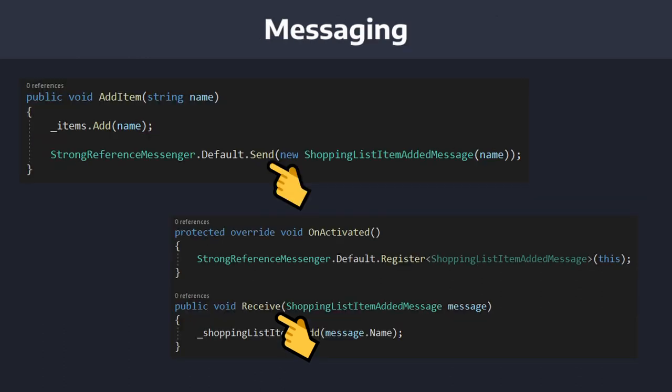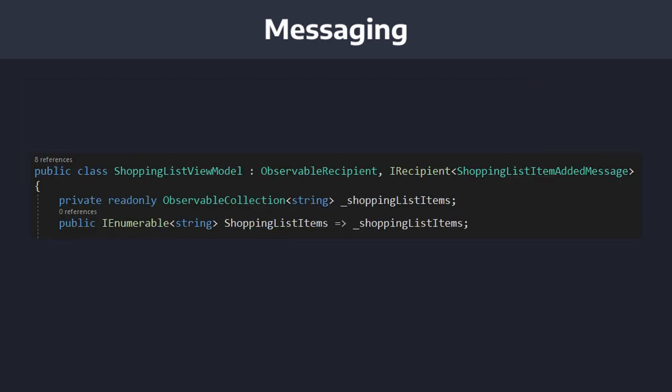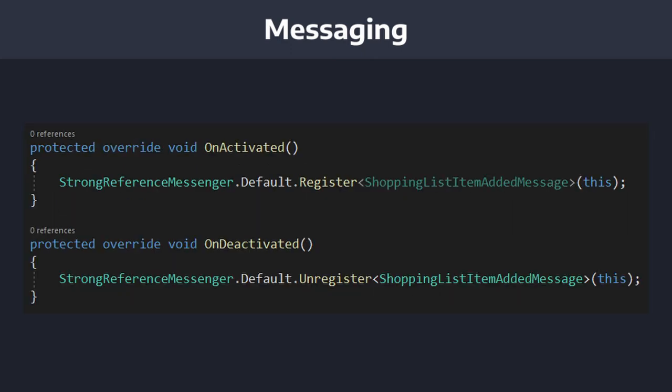The MVVM Toolkit also offers a bunch of messaging infrastructure. These messengers offer communication between components, such as between view models. This is where ObservableRecipient comes into play — instead of a view model inheriting from ObservableObject, it can inherit from ObservableRecipient. ObservableRecipient allows us to override lifecycle methods such as OnActivated and OnDeactivated.